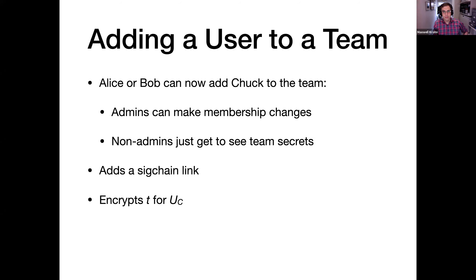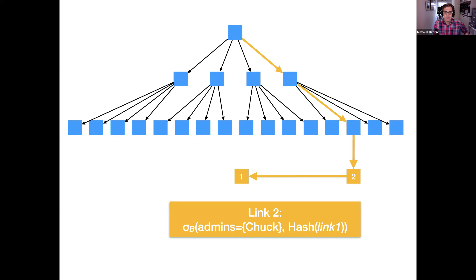How can Alice and Bob add a user to the team? They're both admins, so this is just a matter of adding a new signature chain link and encrypting the team secret lowercase t for Chuck's per-user key. Admins can make membership changes, while non-admins just get to see the team secret lowercase t — they don't get to add and remove users from the team. So here's link number two: we've added a new admin Chuck, signed over the new admin list and the hash of the previous link in the signature chain.